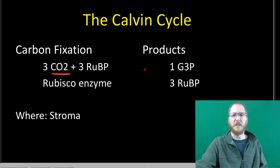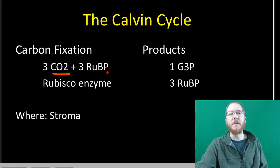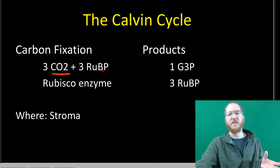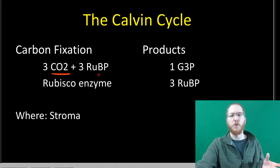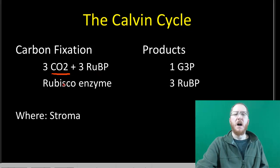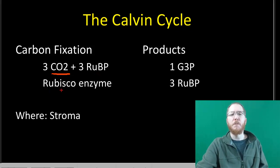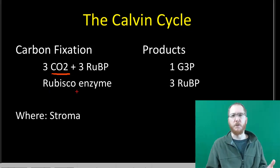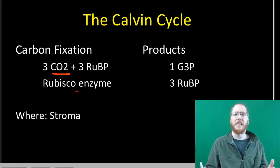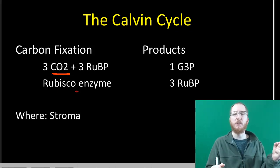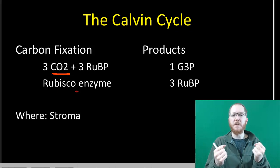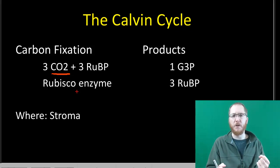Specifically, it's going to attach CO2 to a molecule called RuBP — ribulose bisphosphate is the full name, which you won't need to really know. The enzyme Rubisco is the one that actually does this. It's probably the most common enzyme in the world. Plants have this enzyme, and it allows them to stick a CO2 to a single RuBP. That's the start of the Calvin cycle.